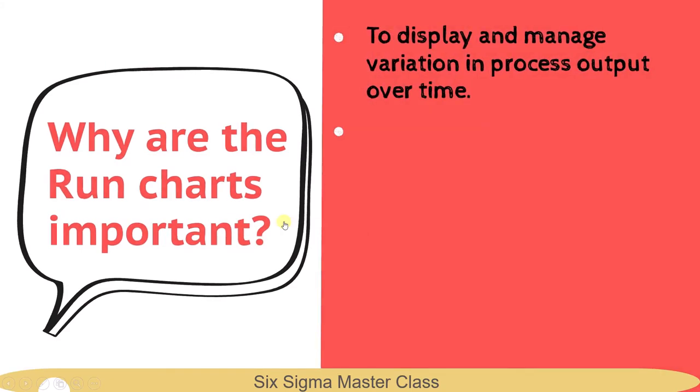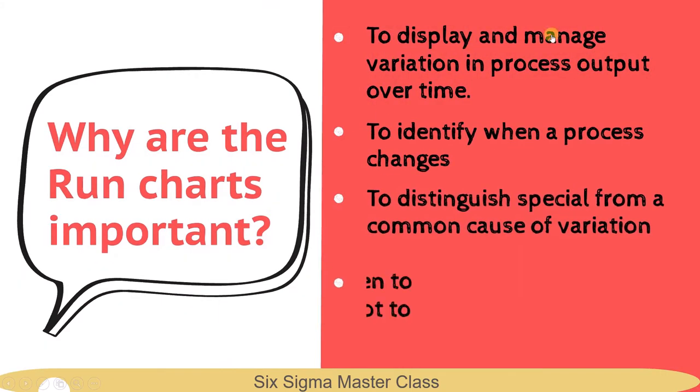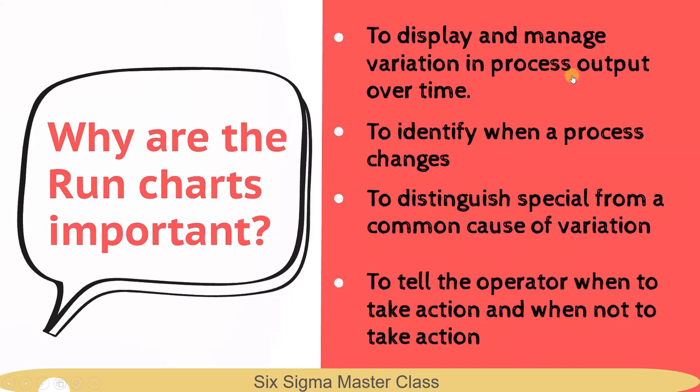Next question is, why are the run charts important? To display and manage variation in process output over time. To identify when a process changes. To distinguish special from a common cause of variation. And to tell the operator when to take action and when not to take action.